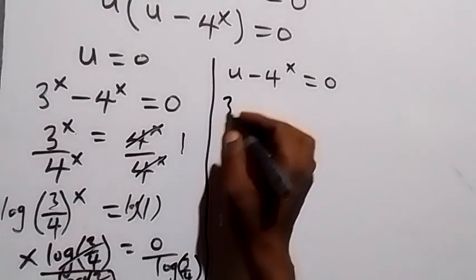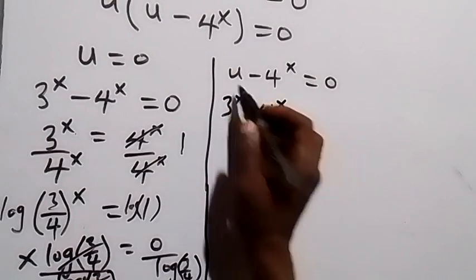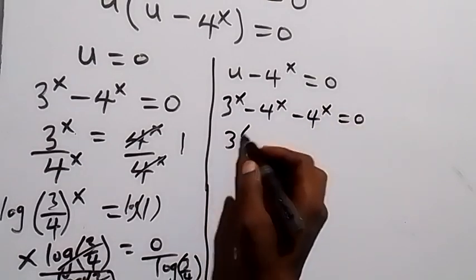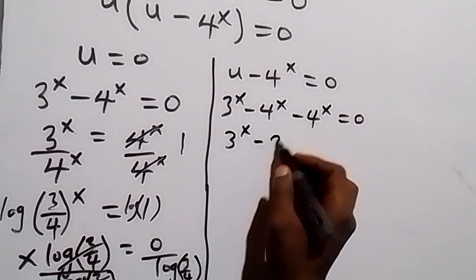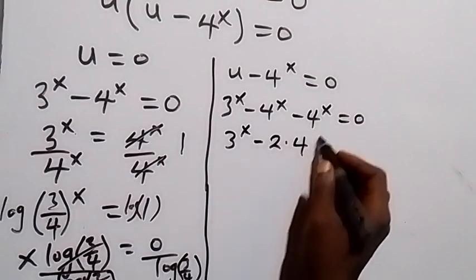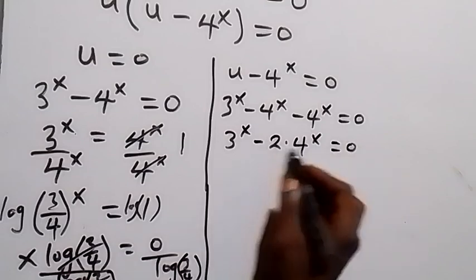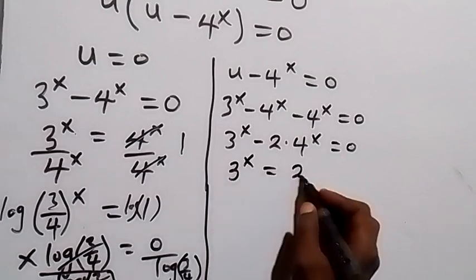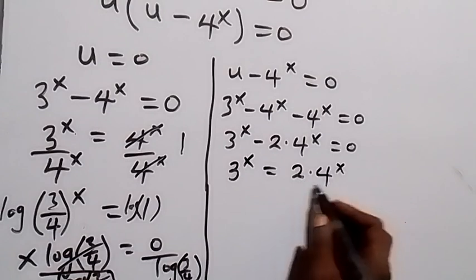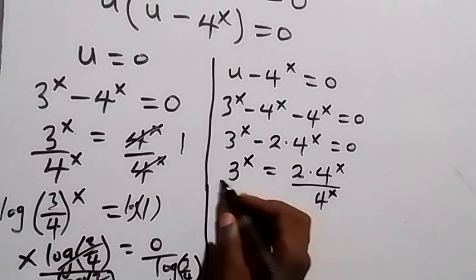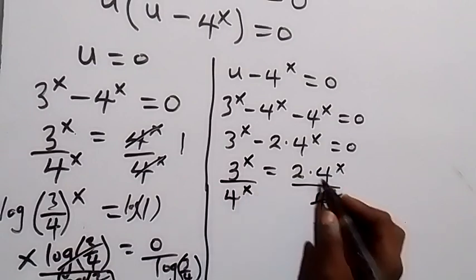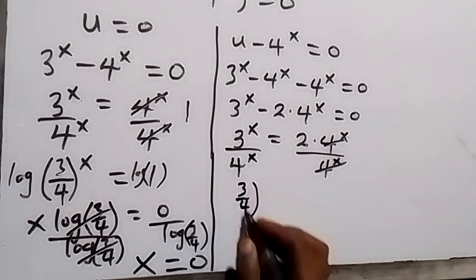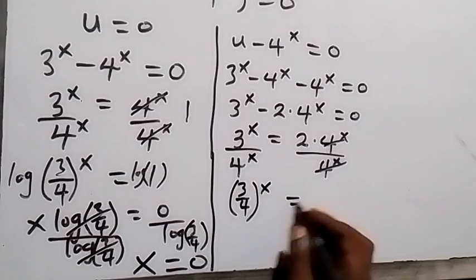For the case u equals 0: substituting back, u = 3^x minus 4^x equals 0, and also minus 4^x equals 0... that gives us 3^x minus 2 times 4^x equals 0. Taking the 2·4^x to the right: 3^x equals 2 times 4^x. Dividing both sides by 4^x gives (3/4)^x equals 2.